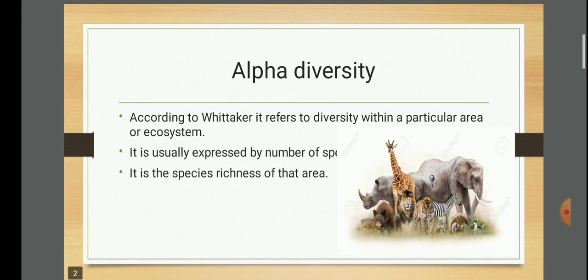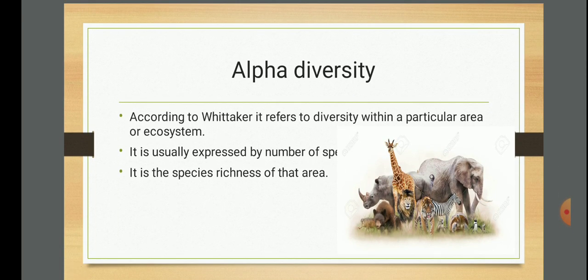There are mainly three types of species diversity. Let's go with the first one: alpha diversity. According to Whittaker, it is referred to as diversity within a particular area or ecosystem. So if you take a place you are really familiar with, like New York, or Thrissur, or New Delhi, or Scandinavia - these particular areas have some species that are inherent in that particular area.